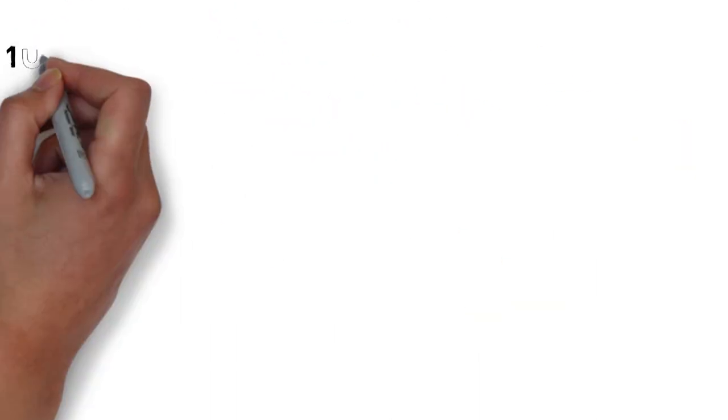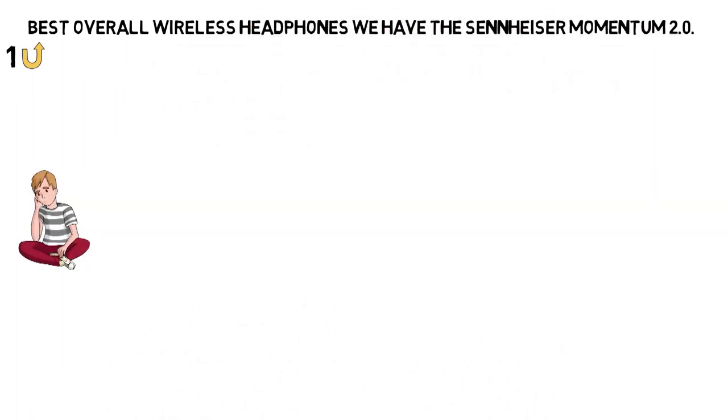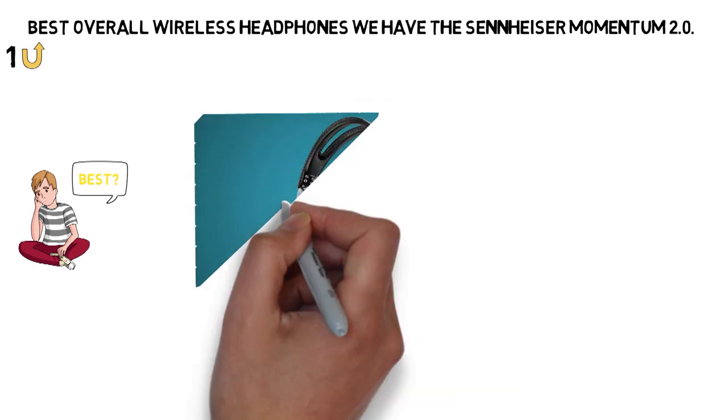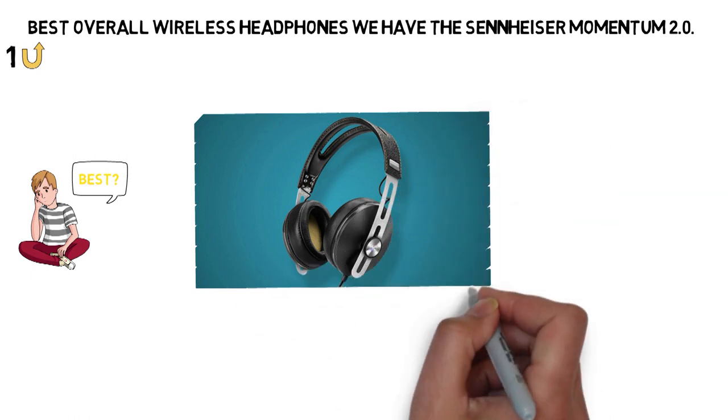Starting off with the best overall wireless headphones, we have the Sennheiser Momentum 2.0. Which Bluetooth headphones should you get if you want the best of the best? In our testing, the best wireless headphones money can buy are the Sennheiser Momentum 2.0 wireless over-ear headphones.